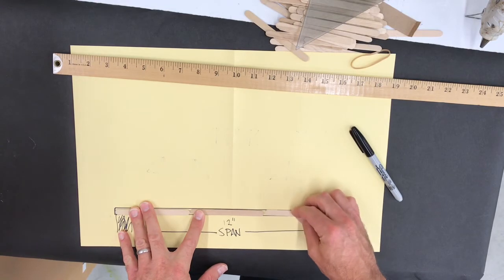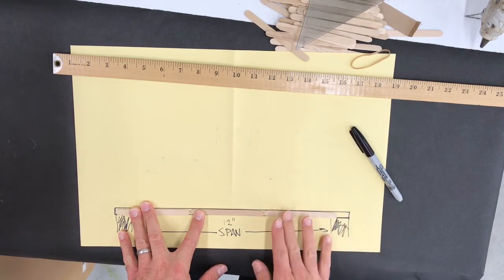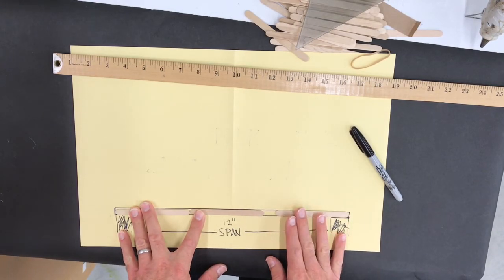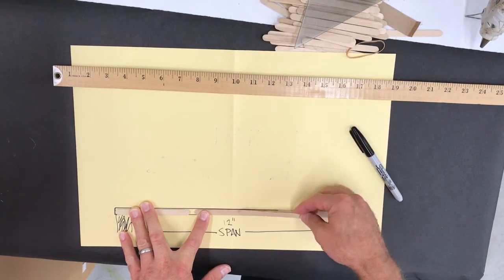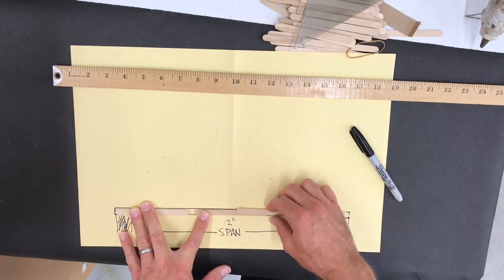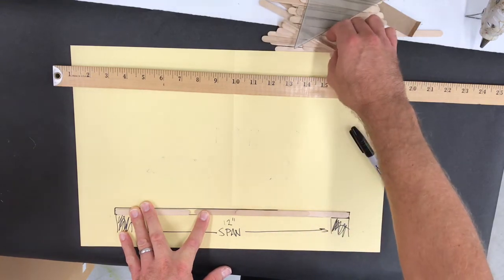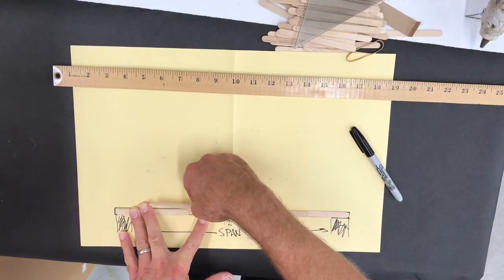So you can imagine then that this gets filled in with popsicle sticks. Something like this, like this. Although we can see we fell short there, so maybe we'll have to spread that gap out. And then we might have to cover with another one like that. So there's our lower cord or lower beam.